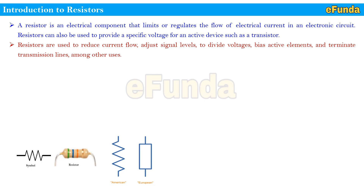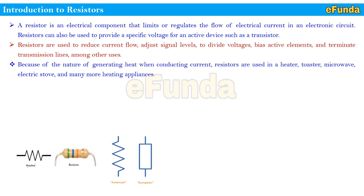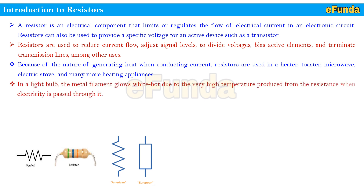Then some questions arise: why and what are the color code resistors used for? By the nature of generating heat when conducting current, resistors are used in heaters, toasters, microwaves, electric stoves and many more heating appliances. Mainly in a light bulb, the metal filament glows white hot due to the very high temperature produced from the resistance when electricity is passed through it.